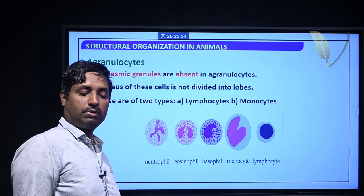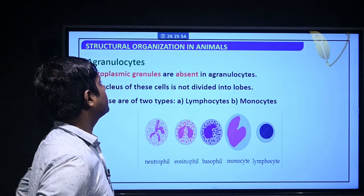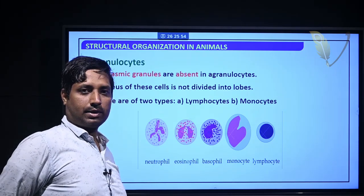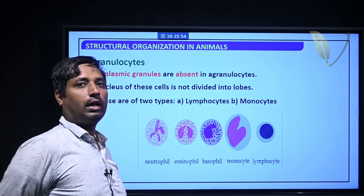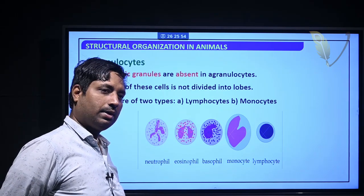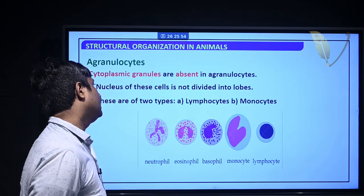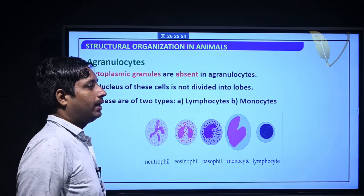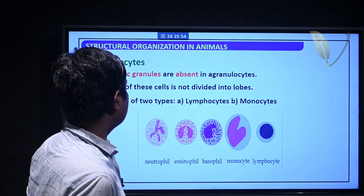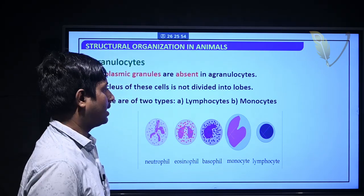Agranulocytes have absent cytoplasmic granules and their nucleus is not divided into lobes. They are of two types: lymphocytes and monocytes.